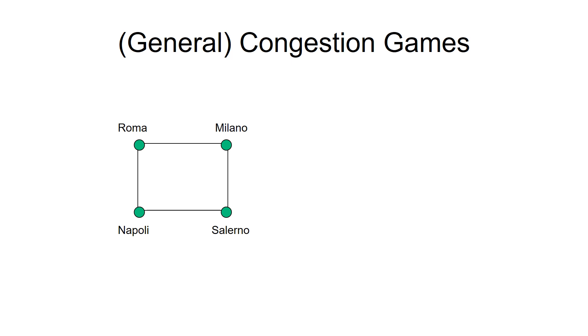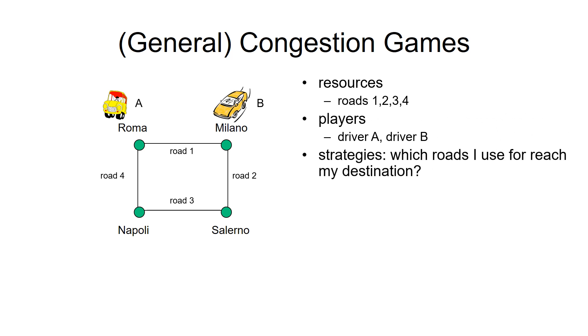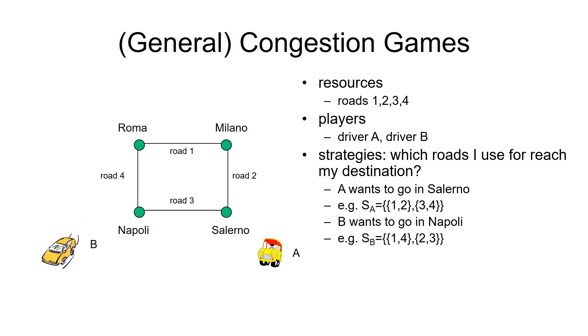General congestion games: assume there are four cities - Roma, Milano, Napoli and Salerno. Resources are roads 1, 2, 3, 4. Players are two drivers, one in Roma and one in Milano. Which road should I choose to reach my destination? Player A wants to go to Salerno and he has two options: road 1 followed by road 2, or road 4 followed by road 3. Player B wants to go from Milano to Napoli, he also has two routes: 1,4 and 2,3.